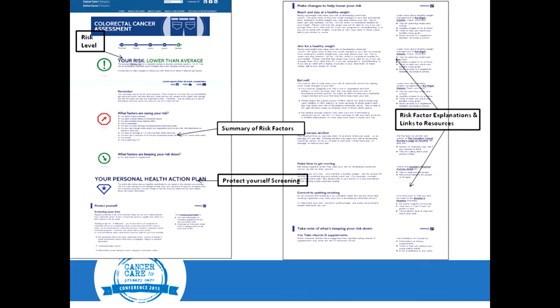What I like about this — and this is what the summary of details looks like — it tells you that you're lower than average risk. I like that it doesn't say that you're low risk; it says you're lower than average, so you still have a risk. It tells them what you're doing right, what you could improve upon, and what opportunities there are to further decrease your risk — such as talking to your family doctor about regular average risk screening.